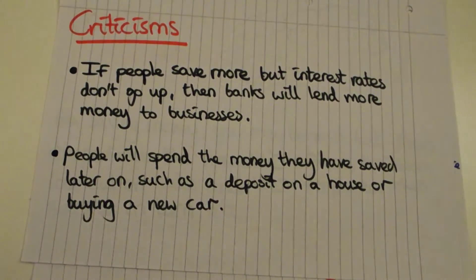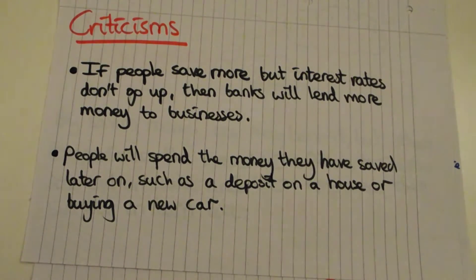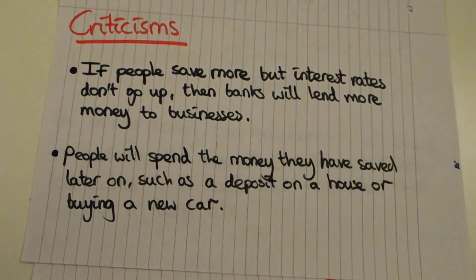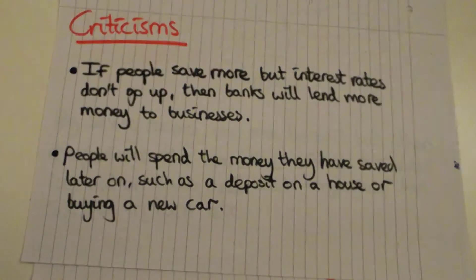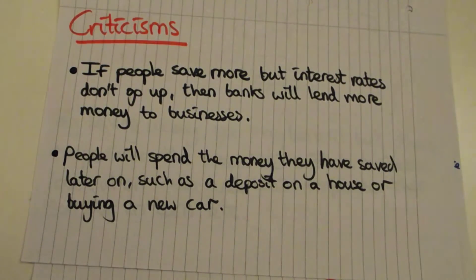The premise of the paradox of thrift is admittedly unrealistic — you're not going to have everyone simultaneously put all their money in a bank and stop spending. But in that hypothetical situation, if everyone decided to spend their savings later, they wouldn't have much to spend money on because many businesses would have shut down. That's the core idea the paradox is demonstrating: it shows what would happen in a hypothetical extreme situation.